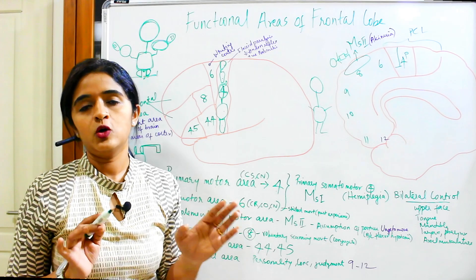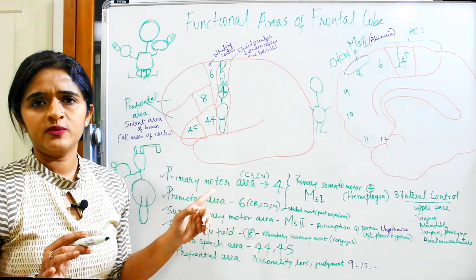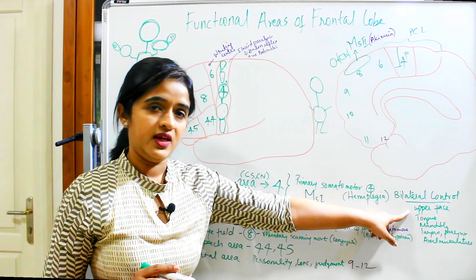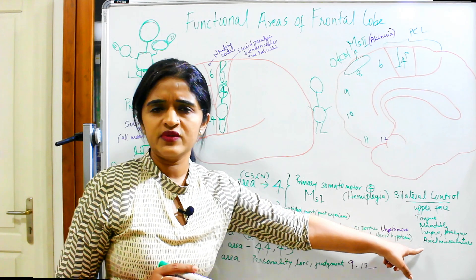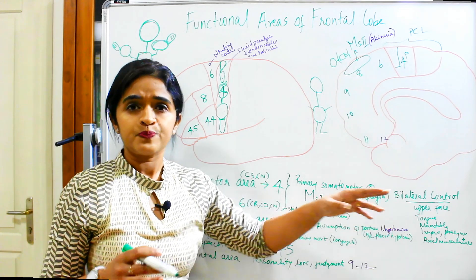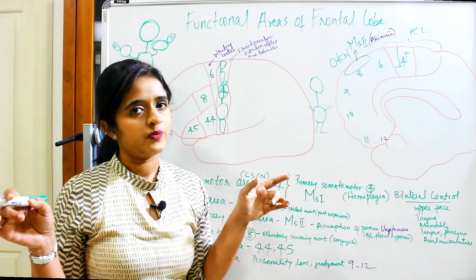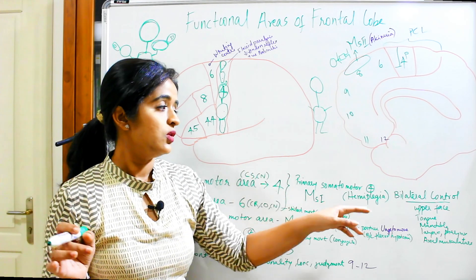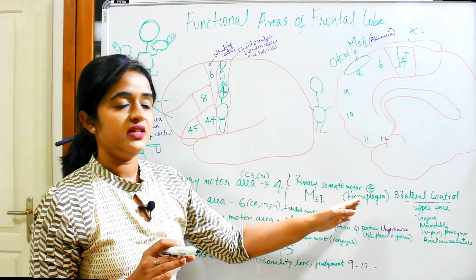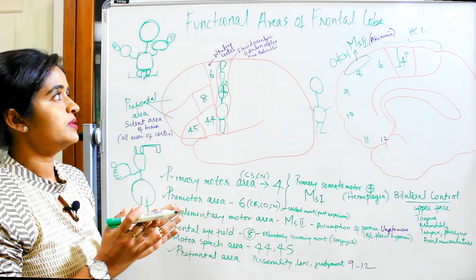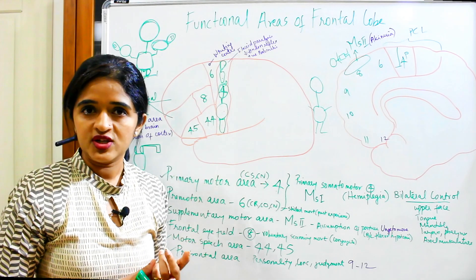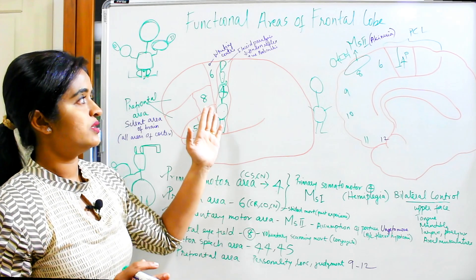Although area four controls the opposite side of the body, some regions — upper part of the face, tongue, mandible, larynx, pharynx, and some axial musculature — have bilateral representation, meaning they are controlled by both cerebral hemispheres. So even if one side has a lesion, these areas won't be affected. A lesion in area four typically presents with contralateral hemiplegia, decreased tendon reflexes, and a positive Babinski sign.